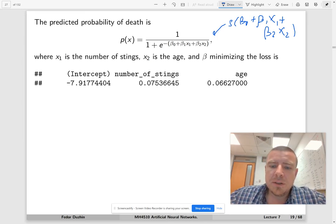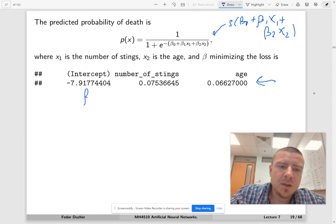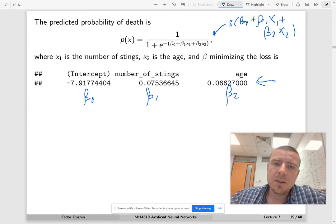Now I have fitted this logistic regression in R and this is what I've got. So these are the values of the coefficients. There is the beta 0 is my intercept. Beta 1 is the coefficient at the number of stings, and beta 2 is the coefficient at age.